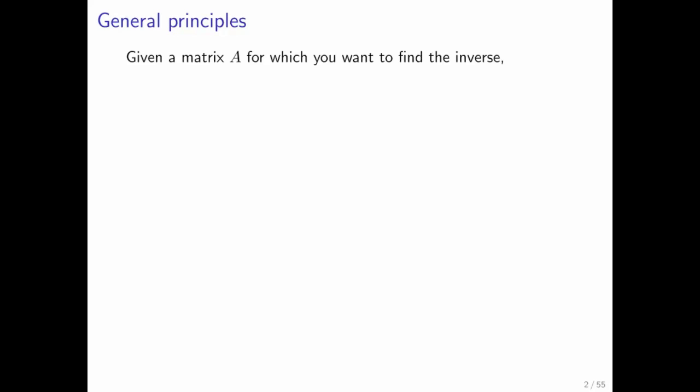So here is the general principle. If you're given the matrix A, what you want to do is check whether A is square, because a linear transformation can only be a bijection if it goes from Rn to Rn, and therefore only a matrix that is square can be invertible.